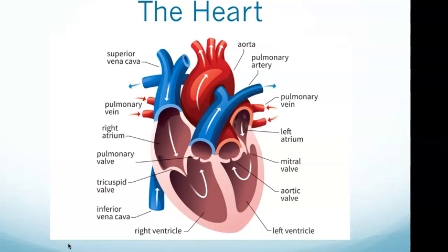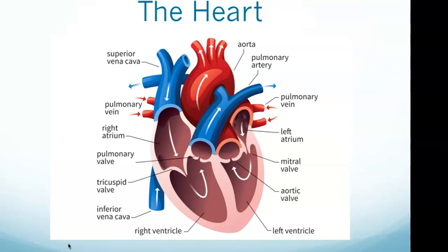Now let's look at blood vessels. Blood outside the heart travels through blood vessels. The three major types are arteries, capillaries, and veins. Arteries are strong and elastic, prepared for the high pressure of blood as it leaves the heart. The largest artery is the aorta.